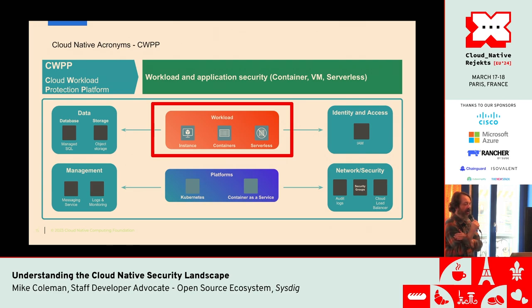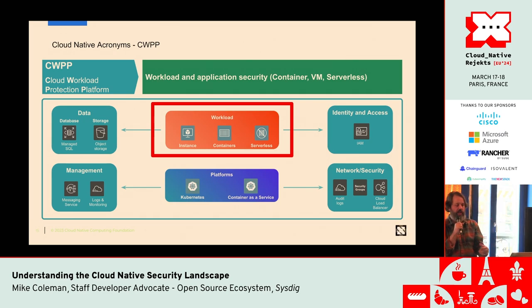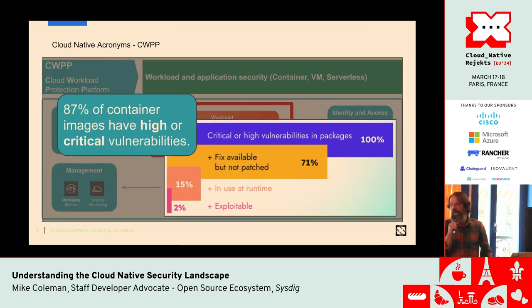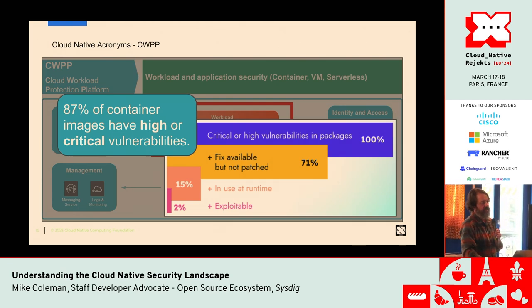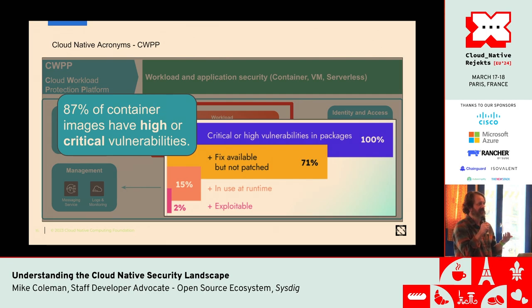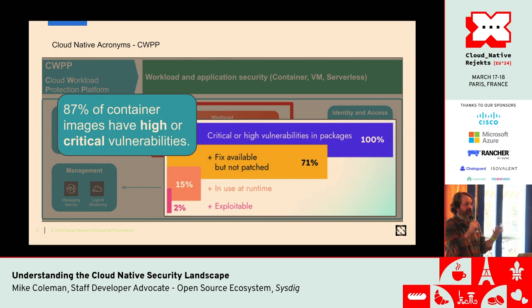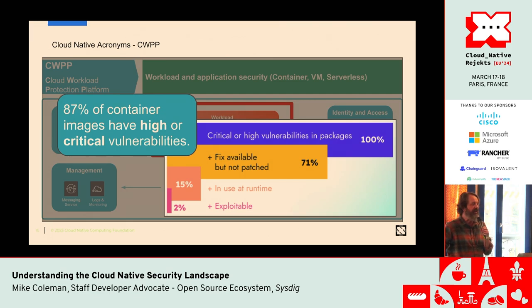The next one is cloud workload protection — how do I know that the stuff I'm running is secure? This is actually where there's a lot of really interesting open-source technology. This is about container vulnerabilities: 87% of container images have high or critical vulnerabilities. Is that a bad thing? It depends — if you have 101 vulnerabilities but you're not using any of those packages, you don't care. But people do get freaked out about it, and there are reasons to be.